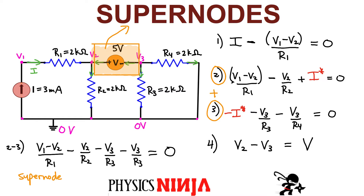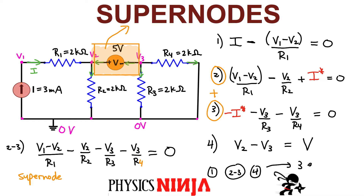To show why this works: if you simply add up equations two and three from the standard nodal analysis, you get the first term and the second term. I star is positive in equation two but negative in equation three, so when you add equations two and three, I star cancels out. You're left with exactly the same terms as the supernode equation. Note: I made a small labeling mistake — the last resistor should be R4, but it doesn't affect the result since all resistors are 2 kilohms. Using the supernode is just a linear combination of nodes two and three, which simplifies the system — we no longer have the variable I star.